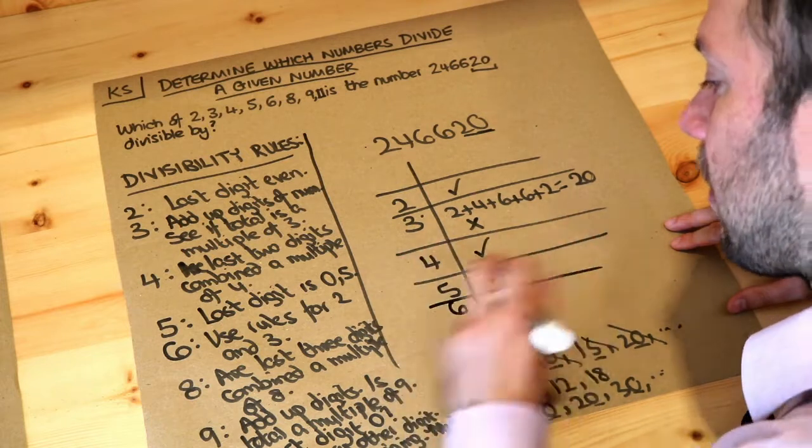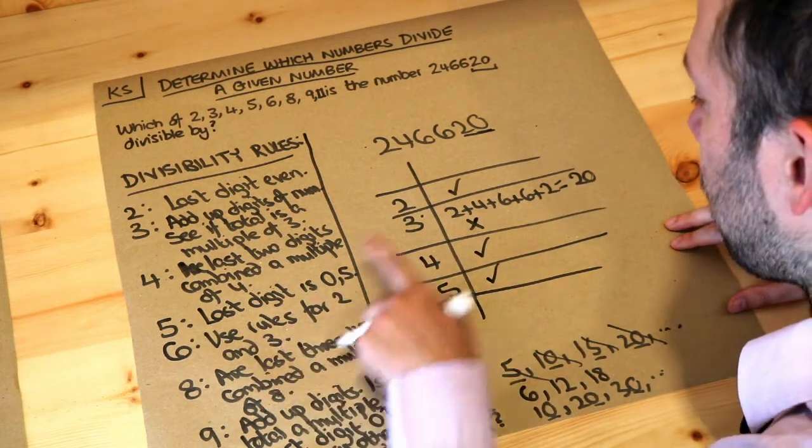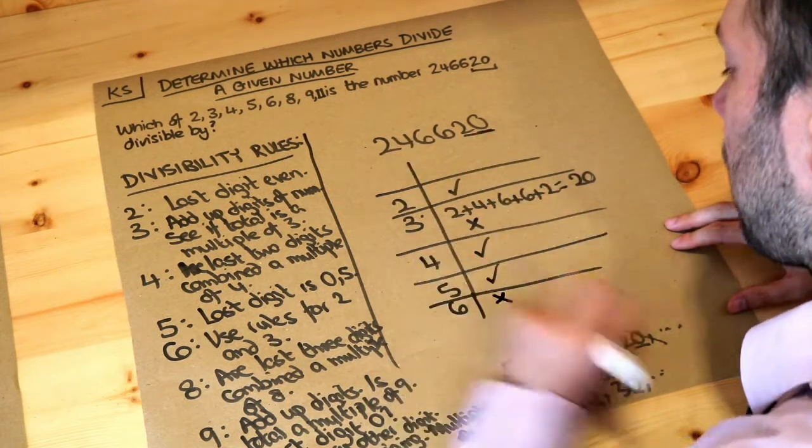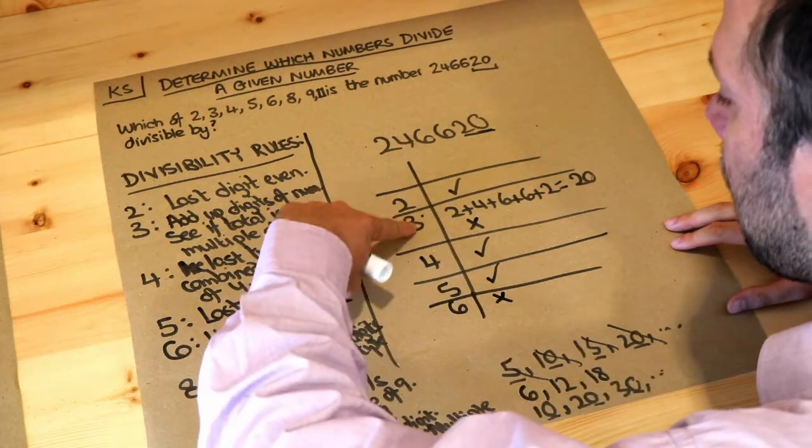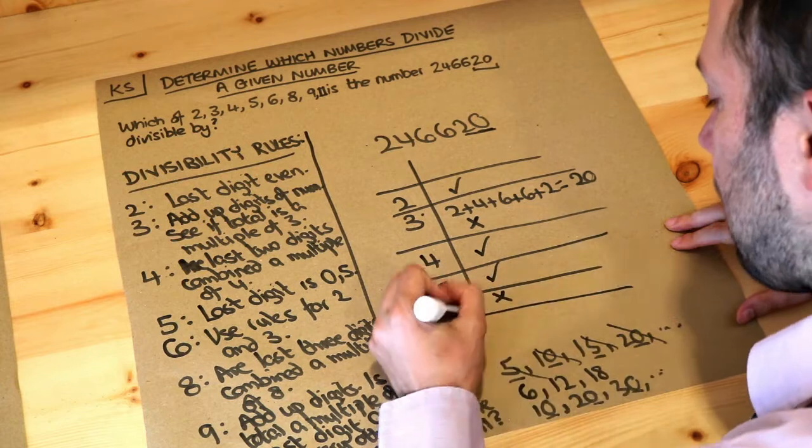What about 6? Well we have to use the rules for 2 and for 3. So it's a multiple of 2 this number but it wasn't a multiple of 3 and therefore it can't be a multiple of 6. Both of these have to have a tick for this one to have a tick. We're going to skip 7.